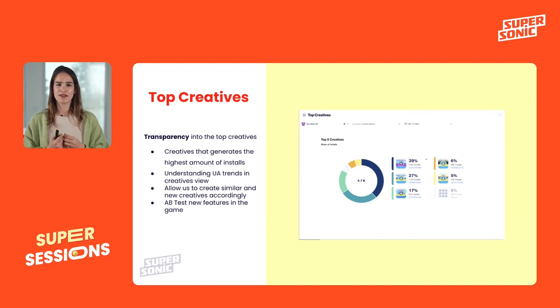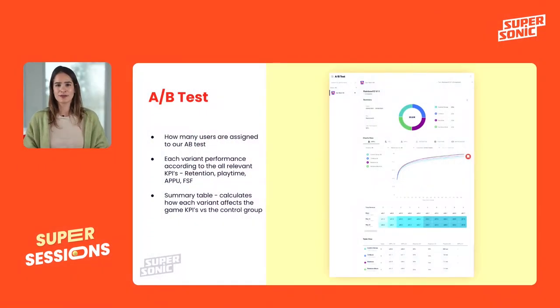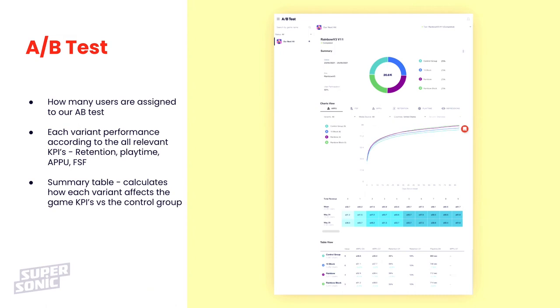Another sneak peek into the UA trend is the top creatives page, showing which creatives are generating the highest number of users. In some cases a really good creative can actually become a new feature inside the game, so understanding your best creatives can inspire new game development directions. And of course the A/B testing page — my favorite. In the publishing phase, we're constantly A/B testing to maximize ARPU. You can see how many users are assigned to each variant, how each variant performs across all relevant KPIs — retention, playtime, APAPU, FSF — and the summary table shows how much each variant improved ARPU versus the default game setup. You can also filter by media source.